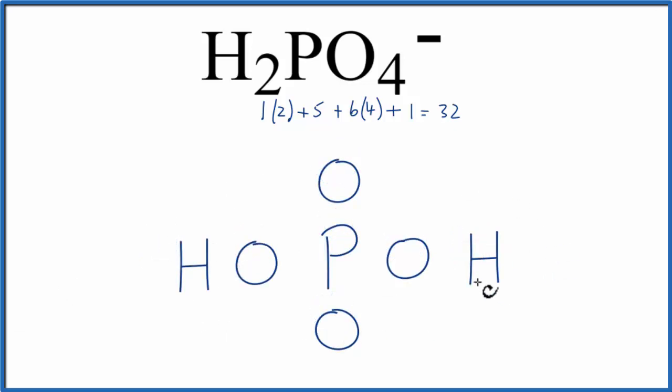So we have the basic structure for H2PO4 minus, let's go ahead and put electrons between atoms to form chemical bonds. Now both of the hydrogens have 2 valence electrons, and that's all they need.